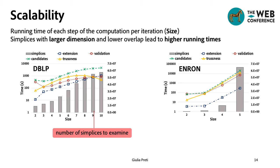The bars indicate the number of simplices to examine in that iteration. As the simplex size increases, the number of simplices increases as well, due to the downward closure property. This, in turn, increases the running time of the steps.